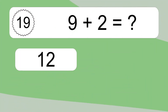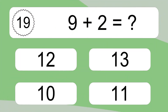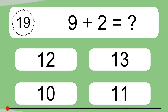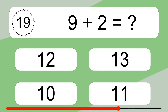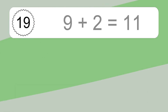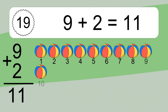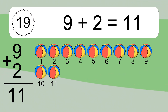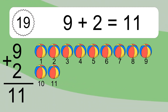9 plus 2 equals what? 9 plus 2 equals 11. Let's count it: 1, 2, 3, 4, 5, 6, 7, 8, 9, 10, 11.